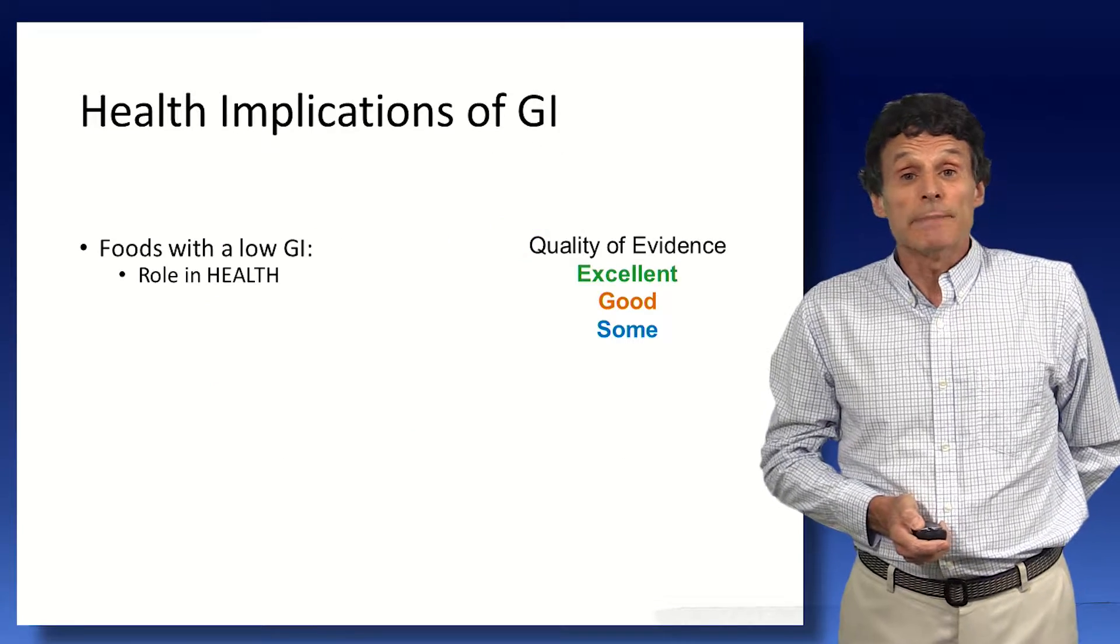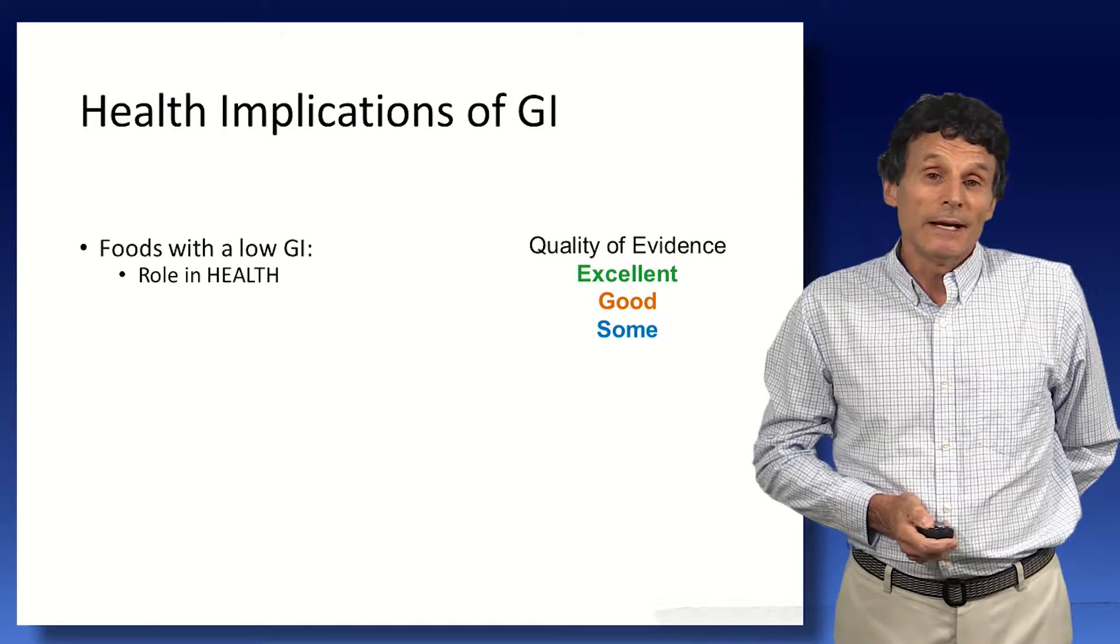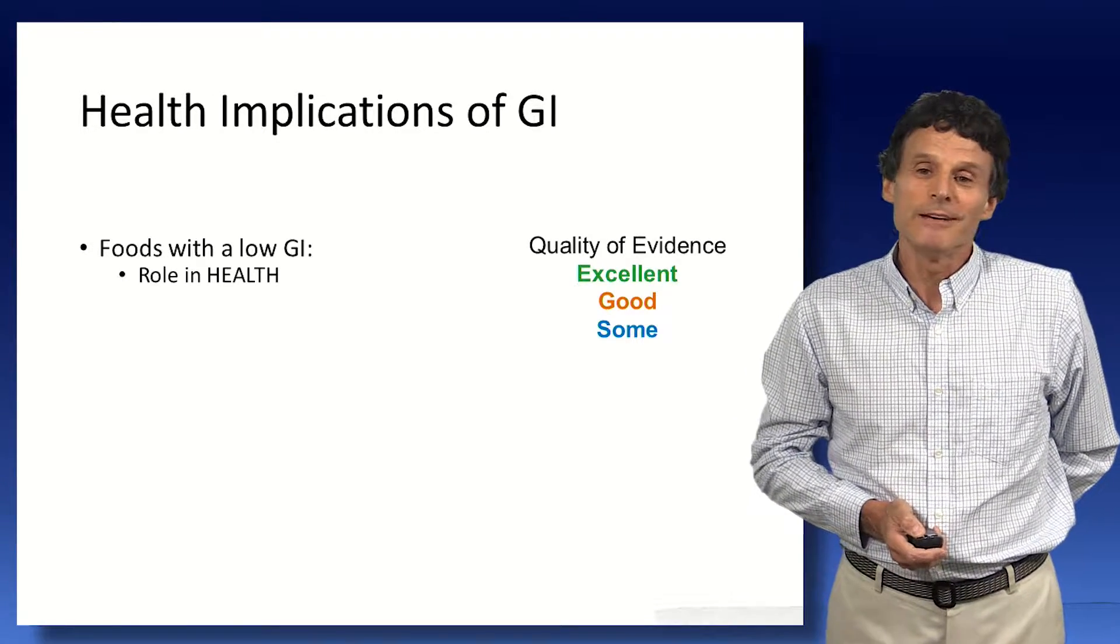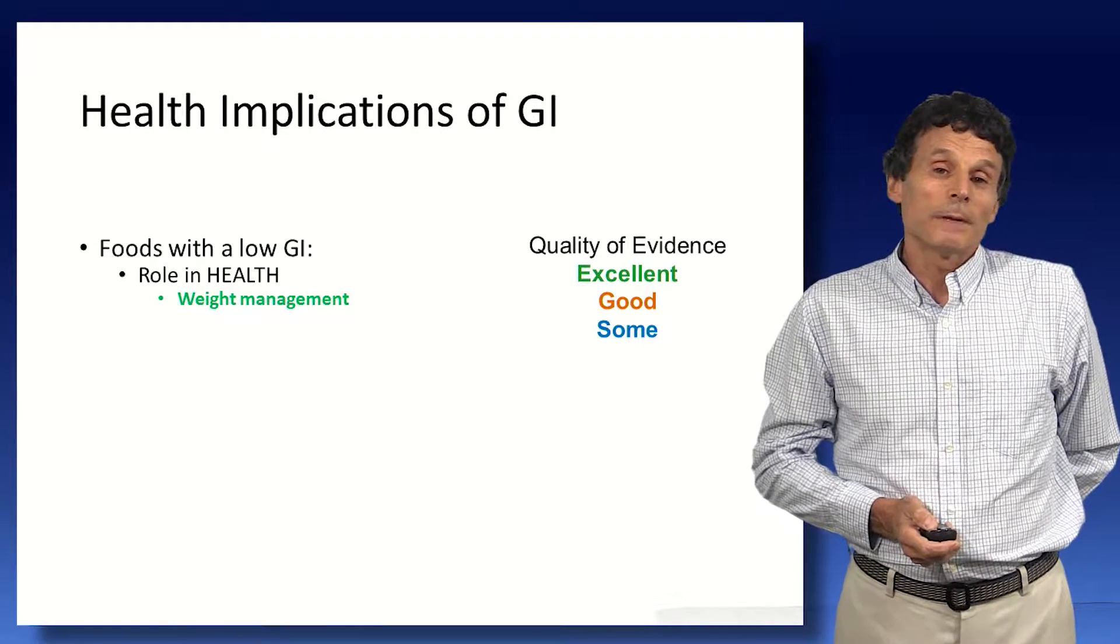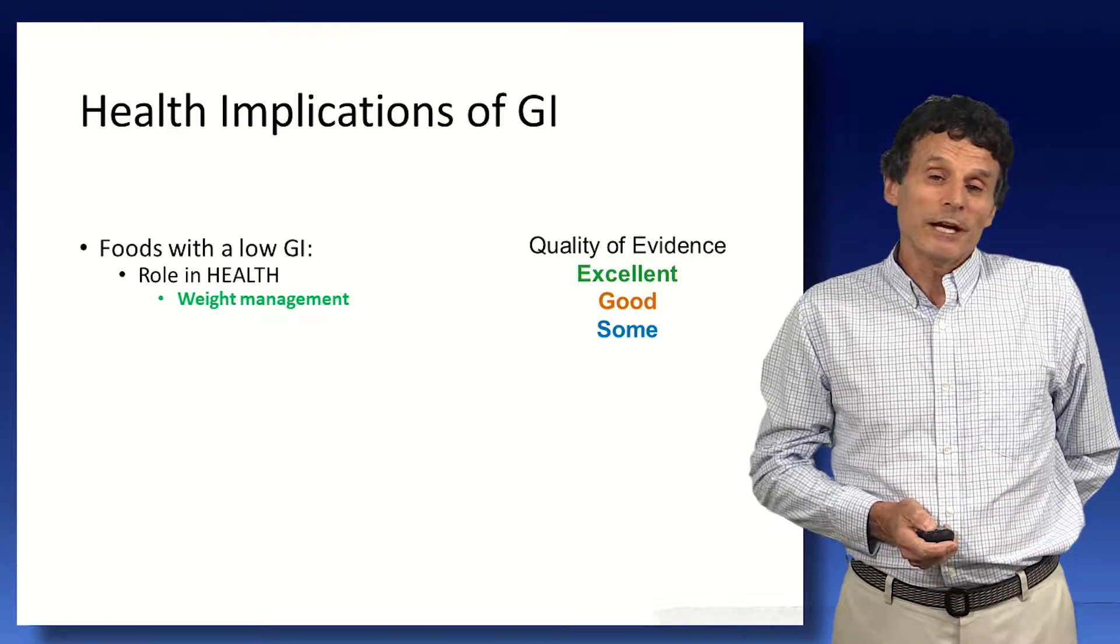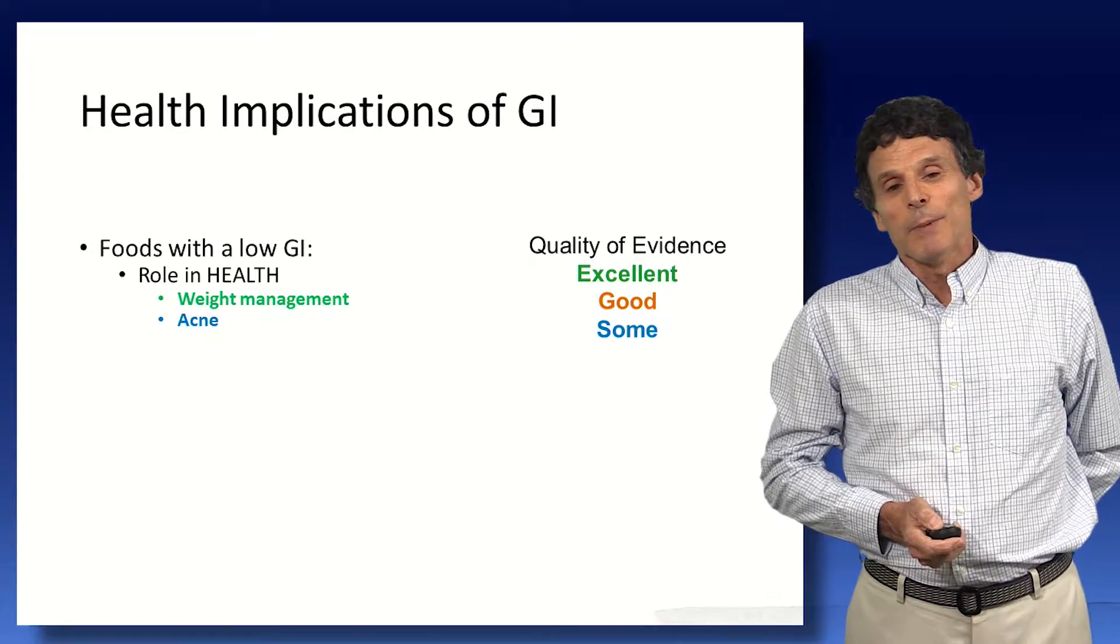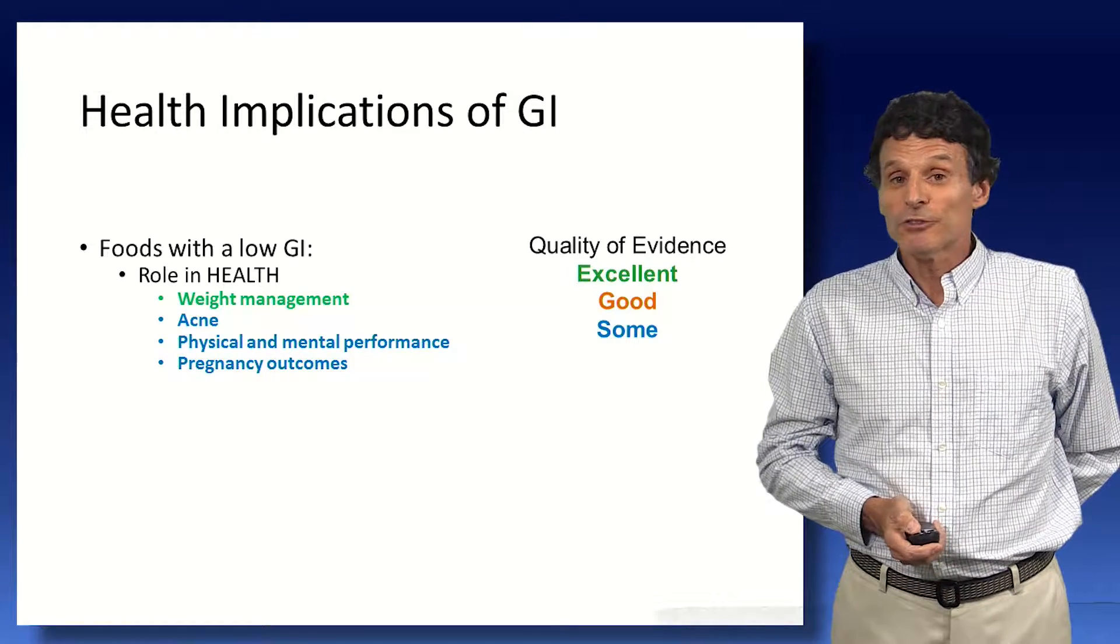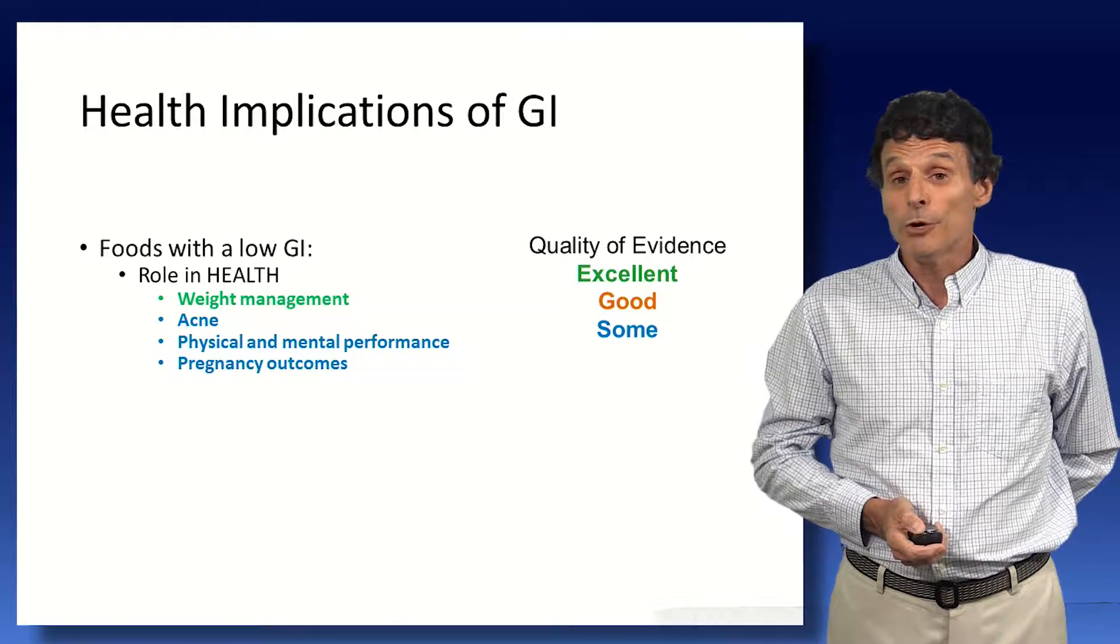It's not just diabetes, which the health implications of GI. There are clinical trial data, and the evidence is color-coded quality green, yellow, and blue. There's excellent evidence that GI is useful for weight management, both increased weight reduction and reduced weight regain. Some evidence it's good for your social life by reducing the severity of acne, improves physical and mental performance, affects pregnancy outcomes, reduce adiposity of the infants born.